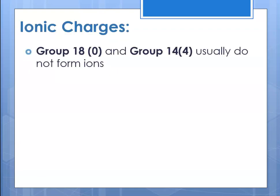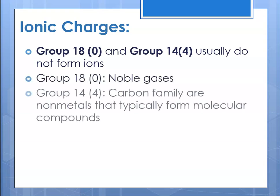For group eighteen — the noble gases — or group fourteen, or four A, they usually do not form ions. Group eighteen are the noble gases and they don't need to form compounds. If carbon were to form an ion, it would be four minus eight, so its charge would be negative four, but generally speaking they don't typically form ionic compounds.